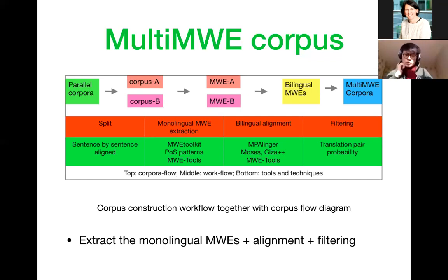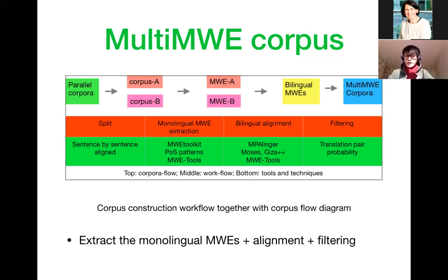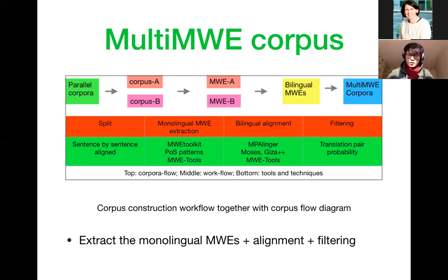We use MWE tools from 2017 by Victor and Bulger, then convert them using the MPAligner tools. Using MPAligner, we do alignment of bilingual MWEs. To perform this alignment we need basic files that can be run from MT systems such as Moses and fast-align to obtain bilingual lexicon translation probabilities. Then we apply filtering to ensure we only use high-quality multi-word expressions that are well aligned.